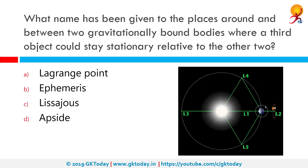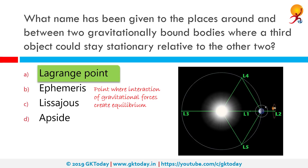Lagrange points are places in between two gravitationally bound bodies where a third object could stay stationary relative to the other two. It is a point where the interaction of gravitational forces creates an equilibrium. Lagrange points are positioned in space where the combined gravitational forces of two large bodies — such as Earth and Sun or Earth and Moon — equal the centrifugal force felt by a much smaller third body. These points are named after Joseph-Louis Lagrange, an 18th century mathematician. There are five such points between Earth and Sun: L1, L2, L3, L4, and L5. In these orbits, a satellite requires very little energy to maintain its orbit and will not be eclipsed from the Sun.